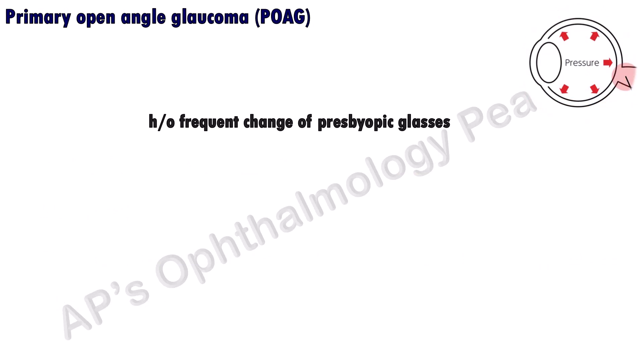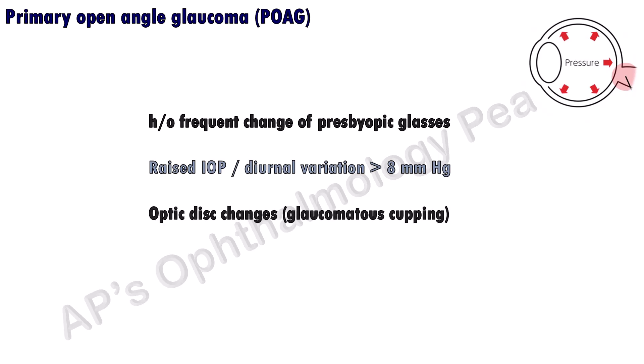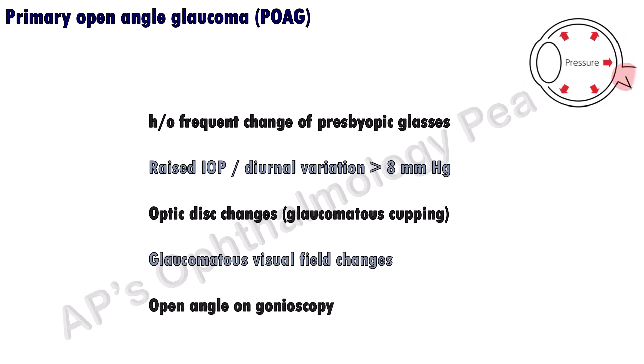In primary open-angle glaucoma, a history of frequent change of presbyopic glasses may be obtained. On examination, either the intraocular pressure is raised above 21 mmHg or the diurnal variation is greater than or equal to 8 mmHg. The optic disc and visual field show characteristic glaucomatous changes. Gonioscopy shows the angle of the anterior chamber to be open.